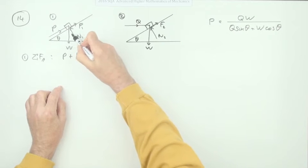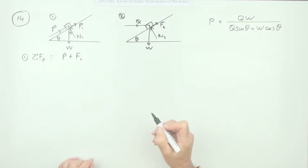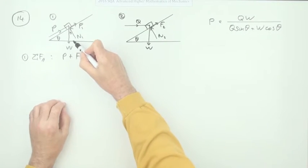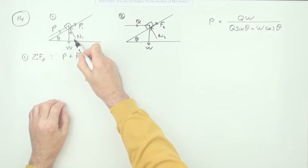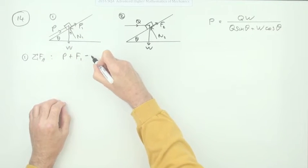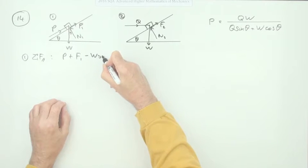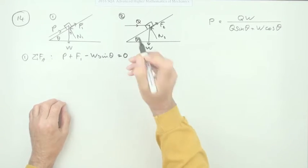You've got a portion of the weight. Remember that angle there is going to be θ, so the part of the weight that's acting downwards is going to be the opposite angle of sine θ. So minus W sin θ should equal zero.